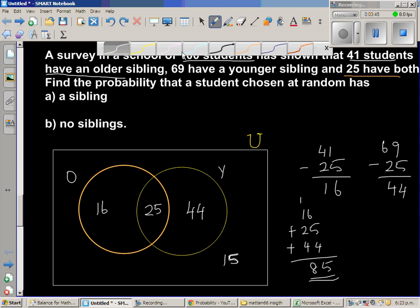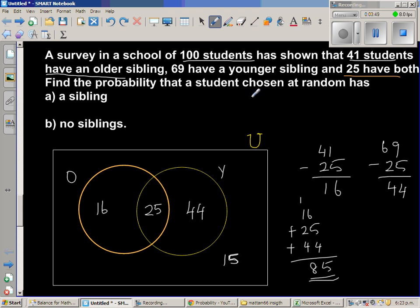So let's answer the question now. What's the question? What's the probability that, find the probability that a student chosen at random has a sibling? So this is the area of students who have siblings. So here, they're asking you what is P of O union Y. Which is, of course you have to add these numbers. But to talk about this rule, P of O union Y, that means this total area, is P of O plus P of Y minus P of O intersection Y. So this area is called O intersection Y. So this area is O intersection Y.